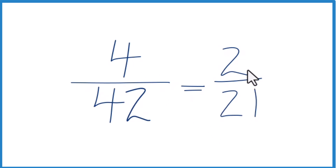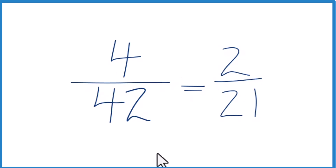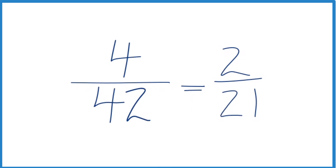And if you divide 2 by 21 or 4 by 42, you get the same decimal answer. They're equivalent fractions — we've just simplified 4/42 down to 2/21. This is Dr. B.